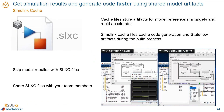Most teams can benefit from Simulink cache files, but these cache files are best suited for teams that have model hierarchies with reference models, a top model that simulates in accelerator or rapid accelerator mode, a standardized platform, compiler, Simulink release, and paths for the whole team, and a source control to manage design files.